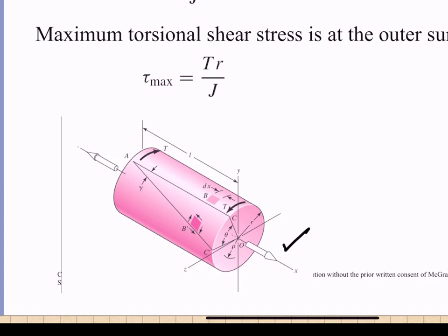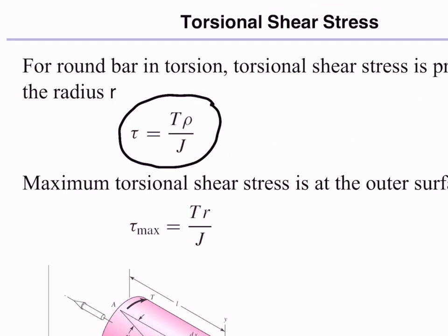We know that the shear stress varies with radius according to this equation. That is, the shear stress is equal to the applied torque times the distance from the center of the shaft divided by J. So there's our J value.